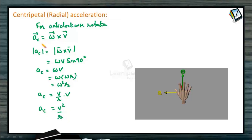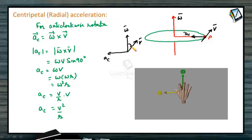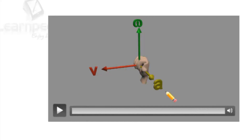For anti-clockwise rotation, centripetal acceleration is ω × V. When a body is in rotation — side view — the particle is at point P. Omega is along the axis, linear velocity V is along the tangent, and centripetal acceleration AC is directed inward. By the right-hand thumb rule: stretch the fingers along omega, curl them towards V, and the thumb gives you the direction of centripetal acceleration, as shown in this figure.